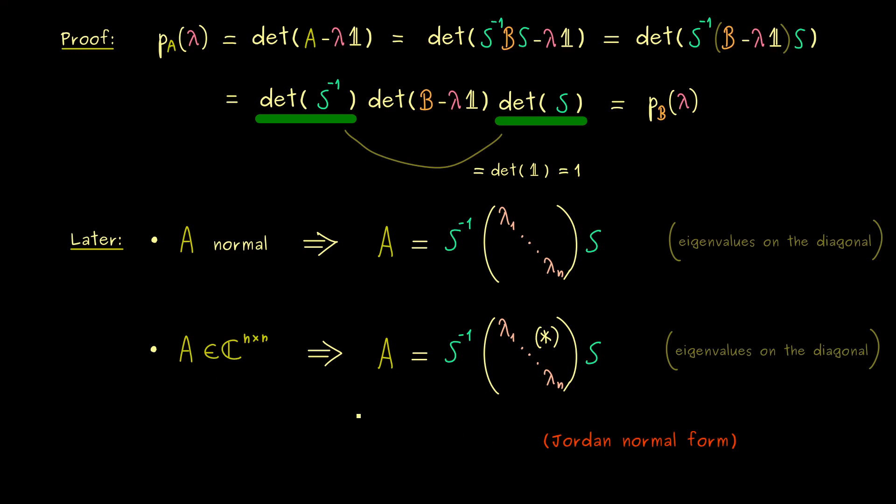But before we can prove these strong results here, we really first have to know how to calculate eigenvectors. This is because, inside this matrix S and S inverse, we find something that is related to the eigenvectors of A. This means, calculating eigenvectors is something you need to do in order to get this transformation here.